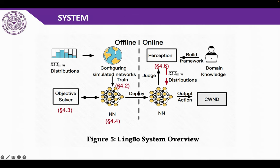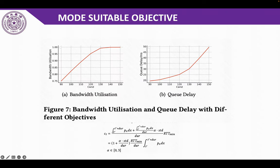We propose a hybrid CC algorithm called Limbo. We employ machine learning during the offline phase to train the decision model. Then during the online phase, the perception module outputs the network parameters and provides the RTT mean distribution to the decision model, producing the final congestion window. We set the target queuing delay as 2 or 3 standard deviations to account for jitter.